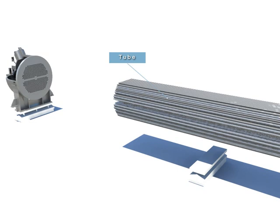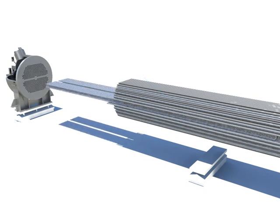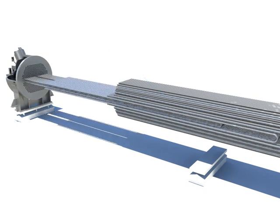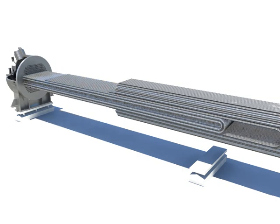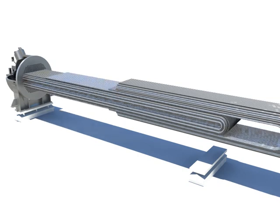The tube is a U-type tube in which the feedwater flows within the tube and exchanges heat by flowing steam at the outside of the tube through the steam inlet.